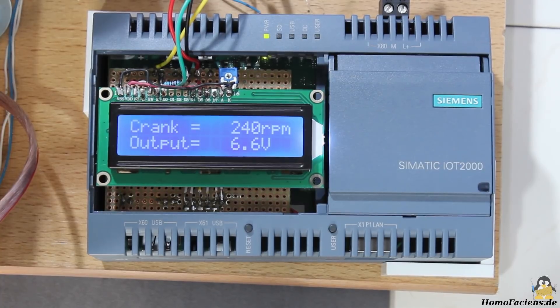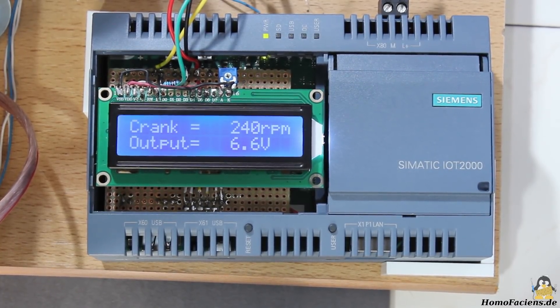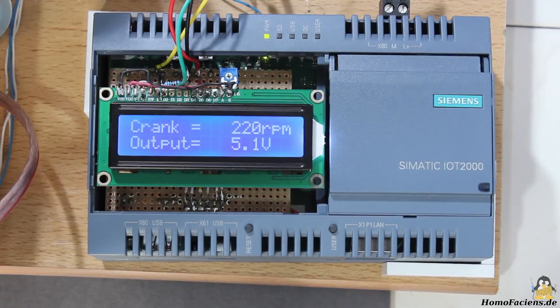Now I can reduce the crank speed carefully to 180 revolutions per minute. The Simatic quits working at even lower speeds.